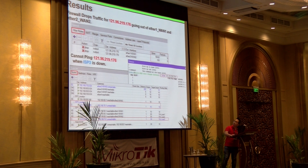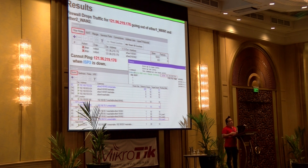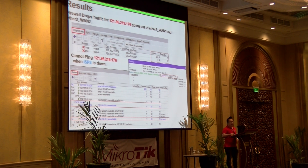This is the last one. 121 is unpingable when ISP3 is down. Now we know the status: if the IP is pingable, it's up; if the IP is not pingable, it's down.